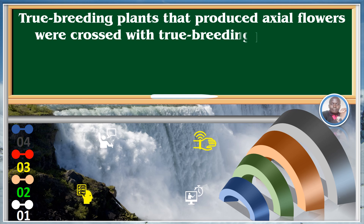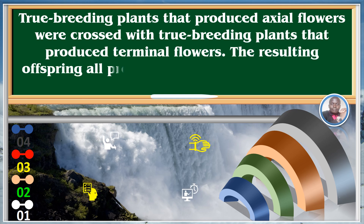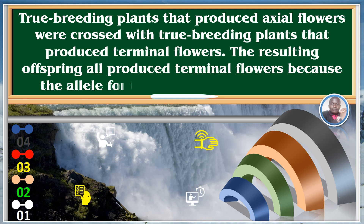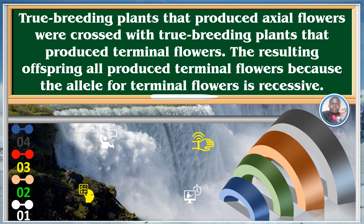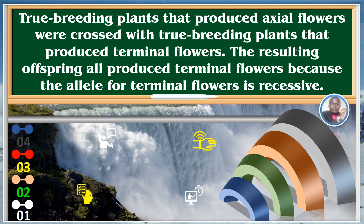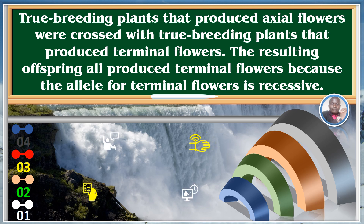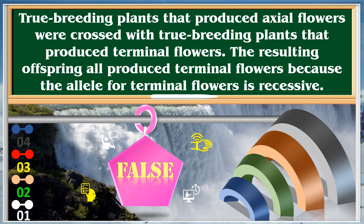True-breeding plants that produced axial flowers were crossed with true-breeding plants. The resulting offspring all produced terminal flowers, because the allele for terminal flowers is recessive. False.